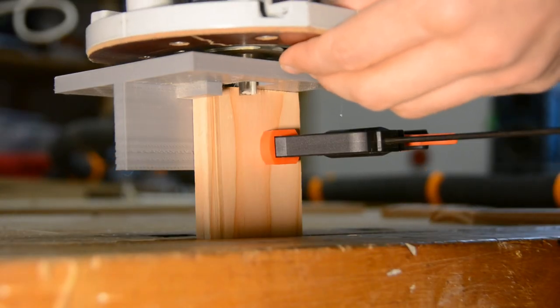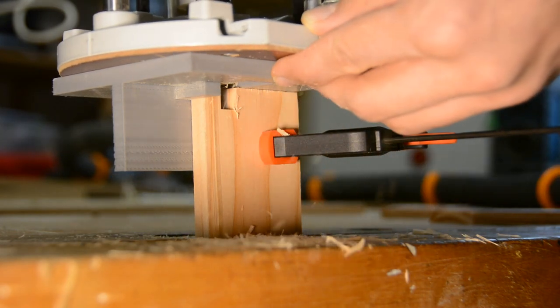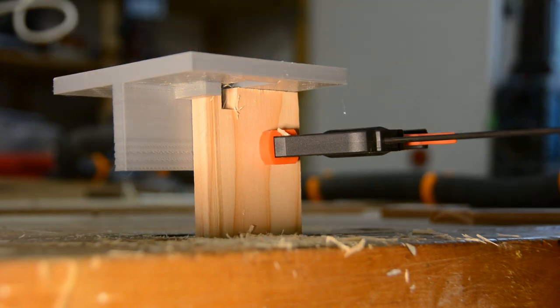With the guide bushing riding in the slot we route the first cut, then move the jig back to the next slot and continue till we reach the end of the board.